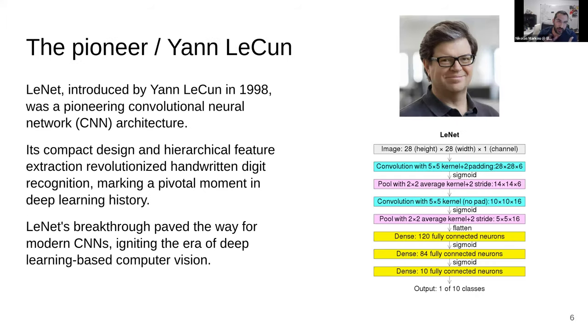A major breakthrough happened in 1998 when Yann LeCun, he earned the Turing Award recently, designed the first convolutional neural network trying to figure out how to automate postal service reading. So he made the first convolutional neural network. It was called the LeNet. It had two convolutional layers, two pooling, three dense layers.